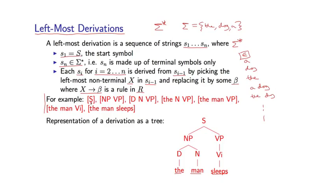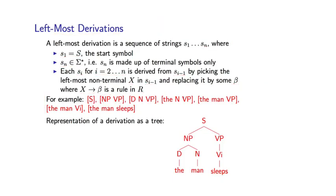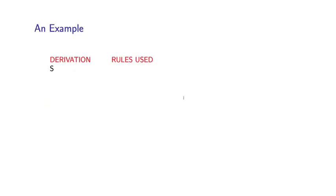We start off with S, that's the first string. The next string in this derivation is NP VP, because I've taken S and replaced it by NP VP. Then I'll take this NP and replace it by DT N, and so on. Let me go to an example where I'll illustrate this more carefully.